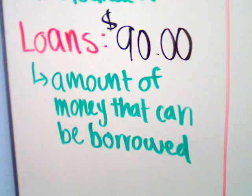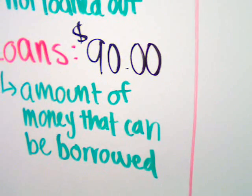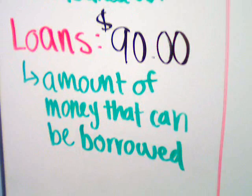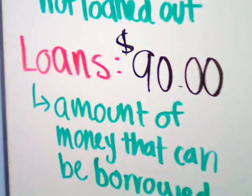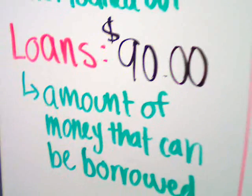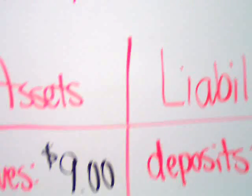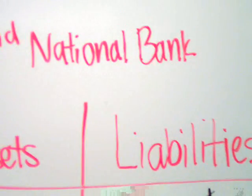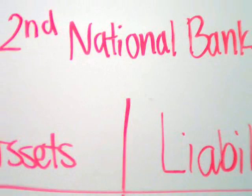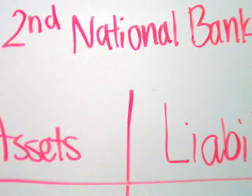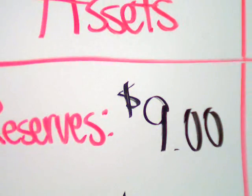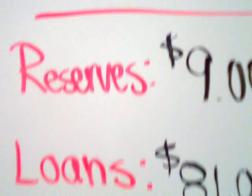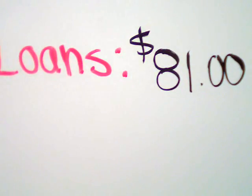Say that Fred comes over and he wants to borrow money from First National Bank. He's going to borrow the $90 that they can loan out. So he goes over and puts it in his bank, which is Second National Bank. That bank has to keep 10% on reserve, so 10% of the $90 is $9, and they can now loan out $81.